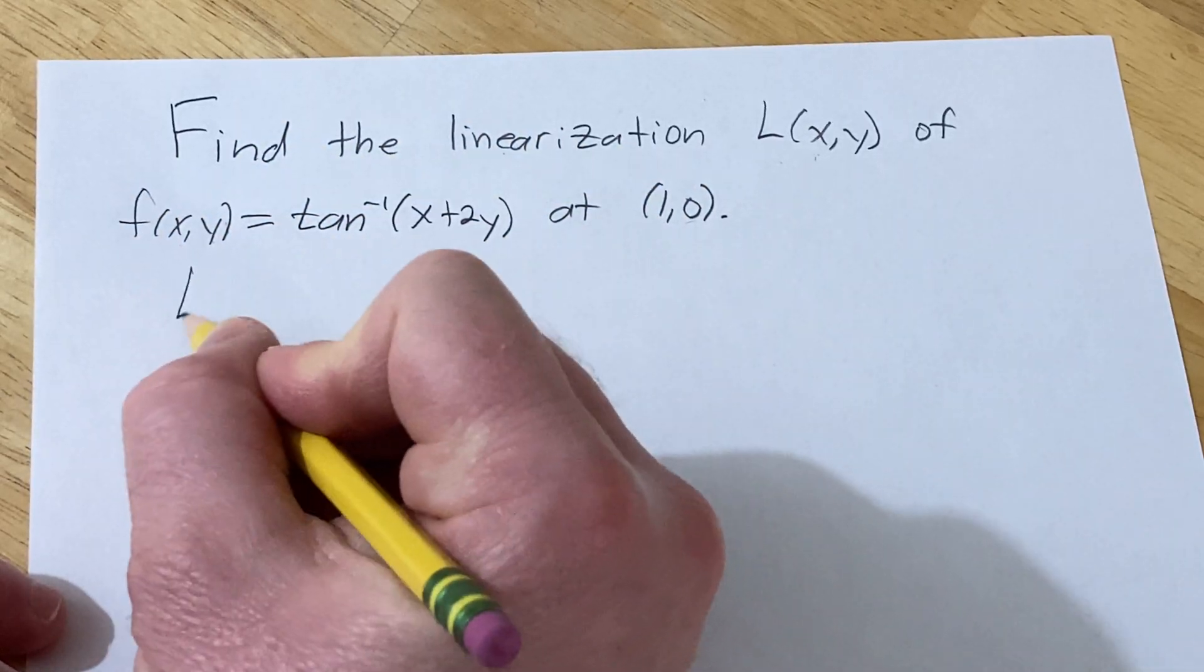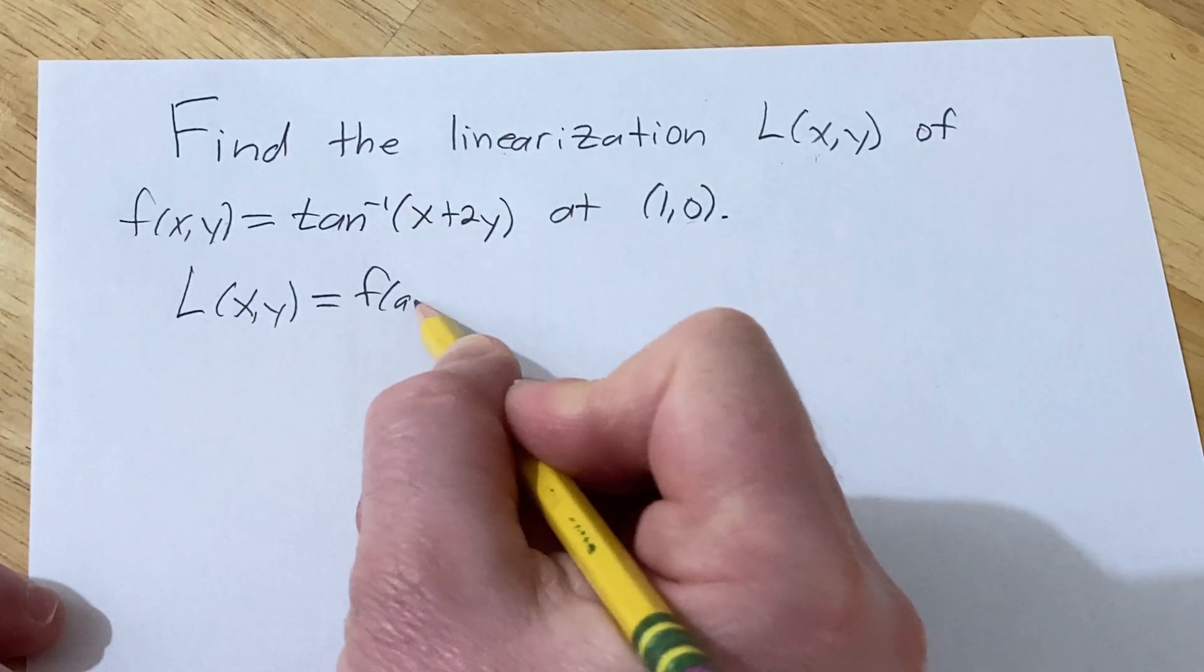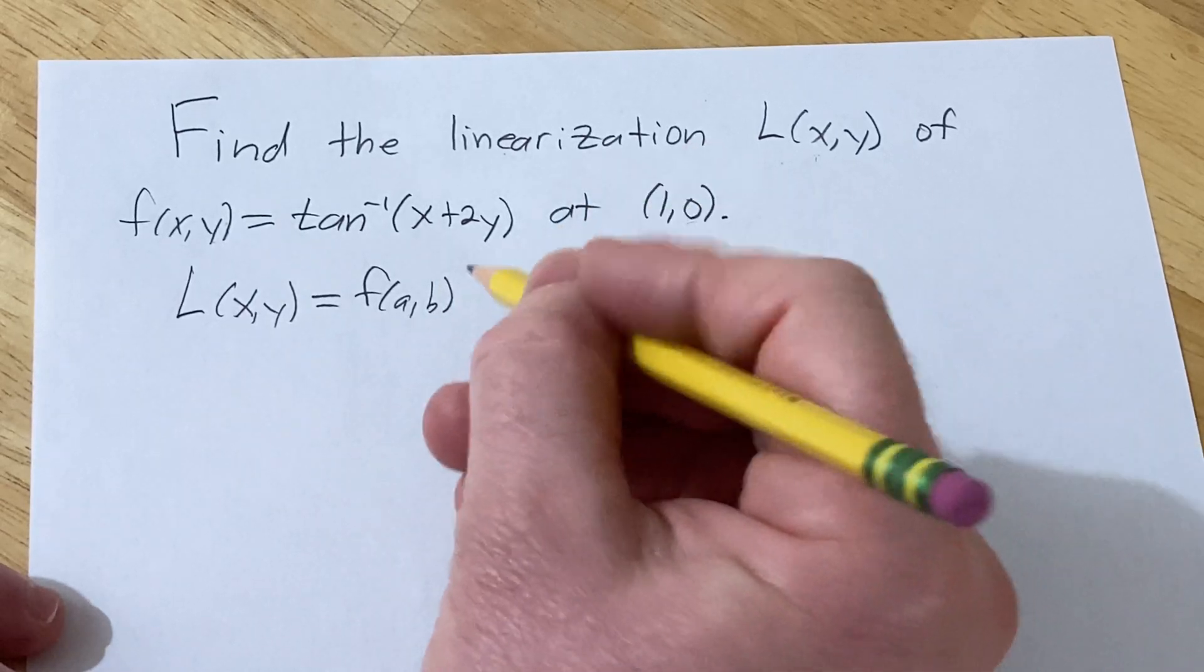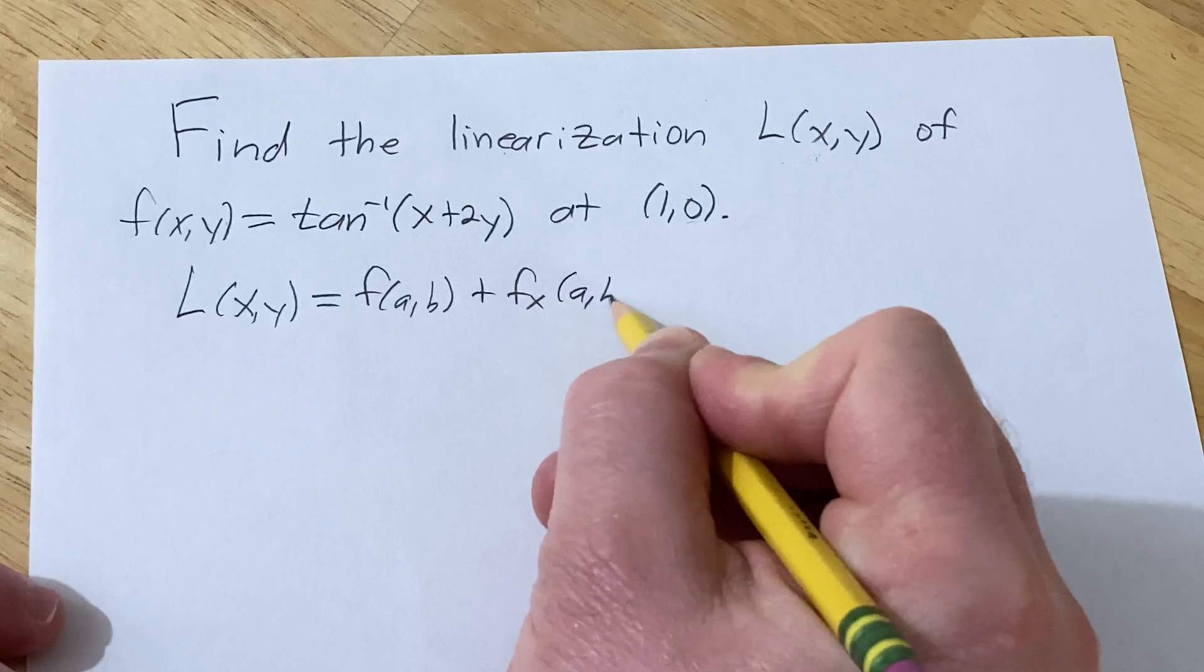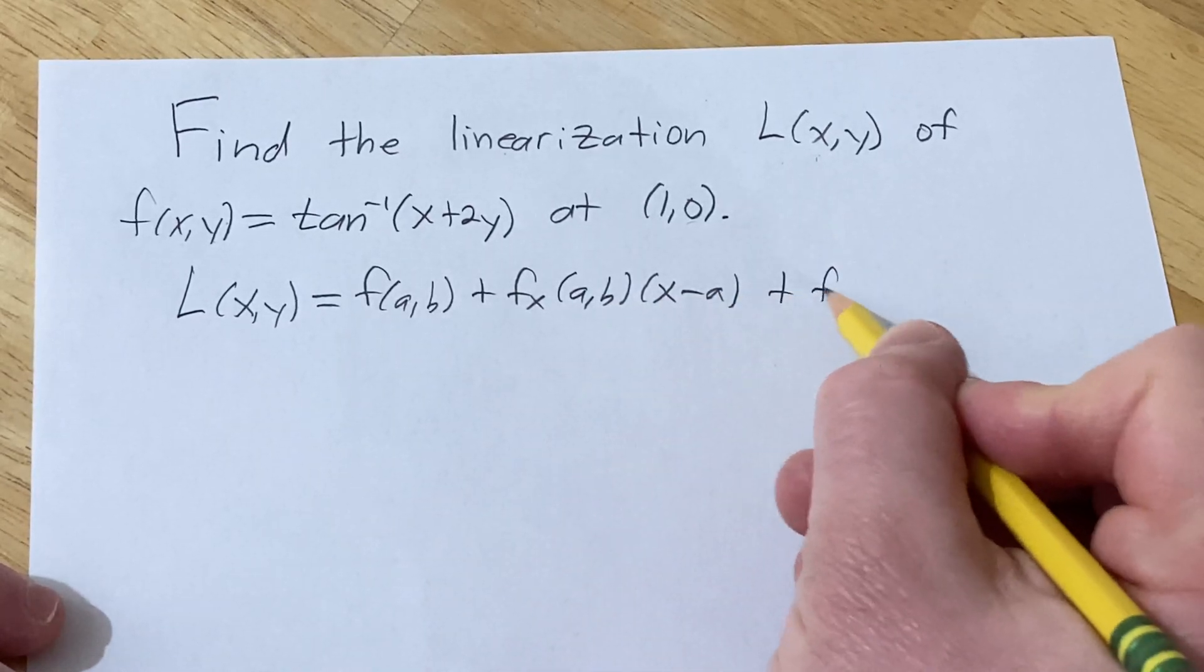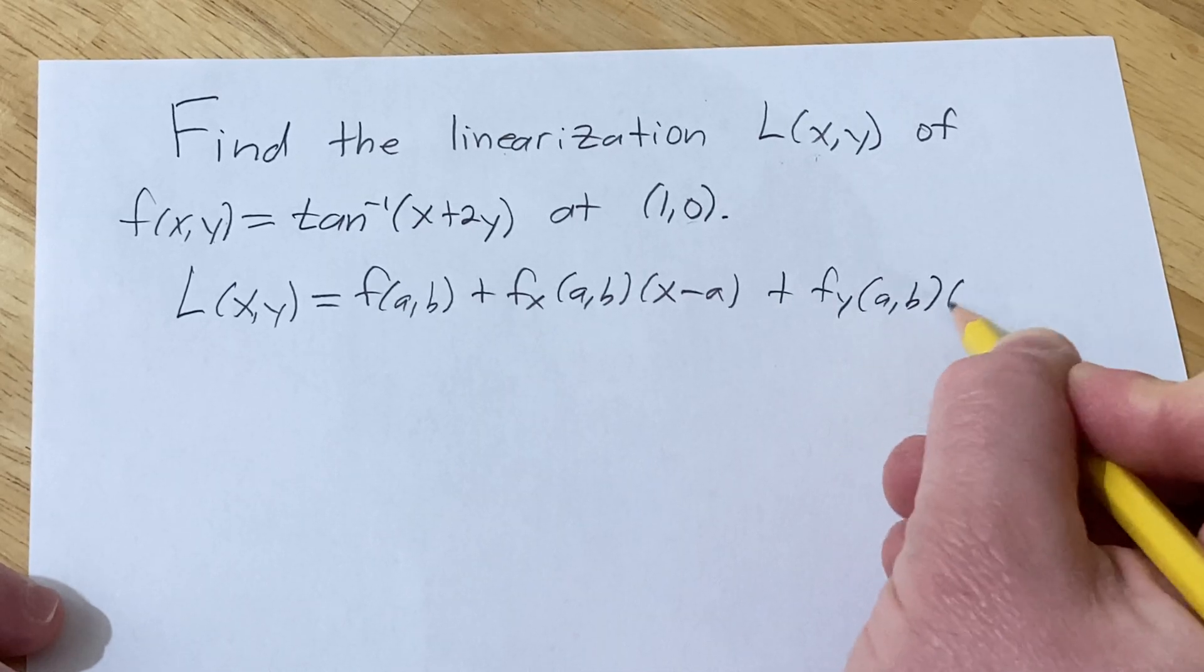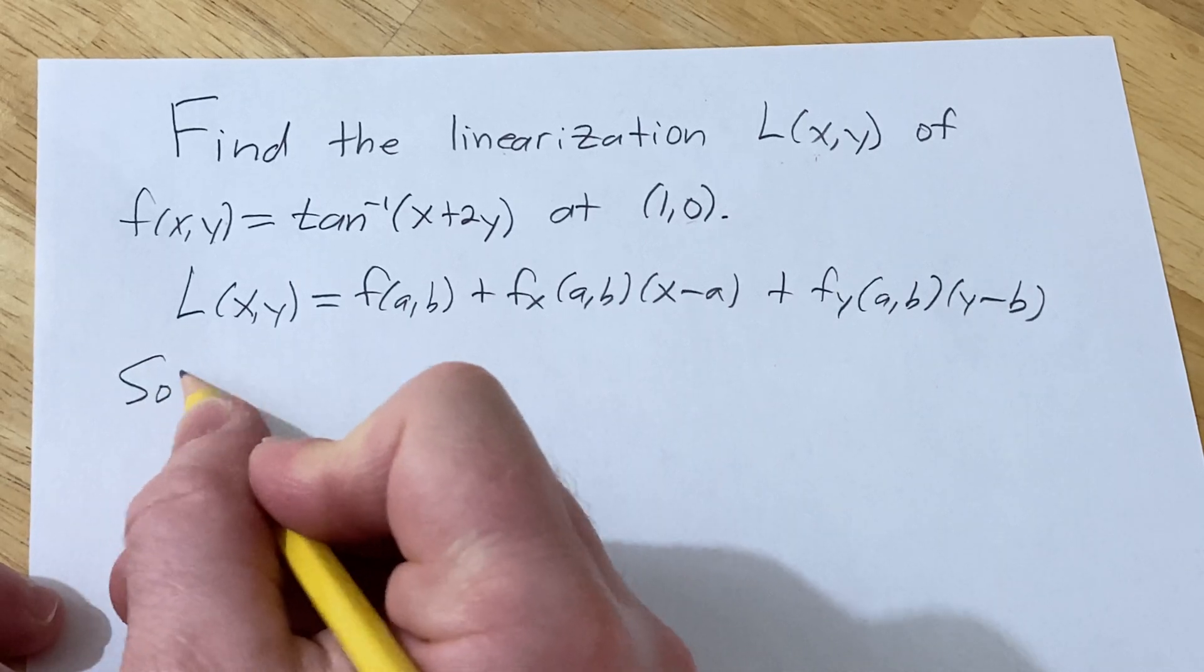So the formula is the following. It's L(x,y) and it's equal to f(a,b), where (a,b) is our point, plus the partial with respect to x at (a,b) times (x-a), plus the partial with respect to y at (a,b) times (y-b). So this is the formula we're going to use in this problem.